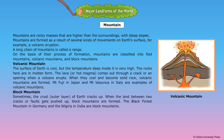Block Mountain. Sometimes the crust, the outer layer of Earth, cracks up. When the land between two cracks or faults gets pushed up, block mountains are formed. The Black Forest Mountain in Germany and the Neelkides in India are block mountains.